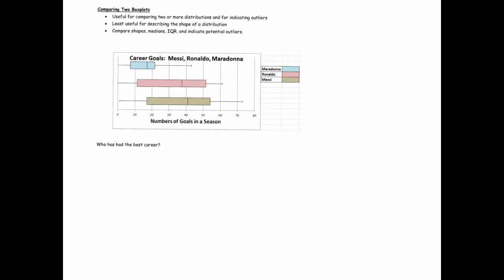They're not that useful for indicating the shape, and part of the reason is because we lose information about individual data values. We can't see peaks. We can't see modes. So shape is something that we can't say a whole lot about unless it's a real obvious skew, or we could say symmetric. Those are about the only words we can really use.